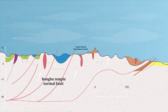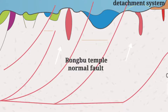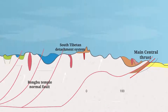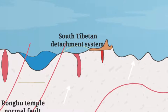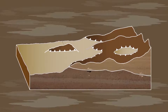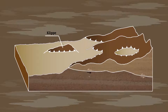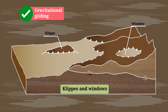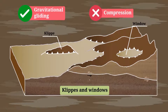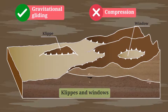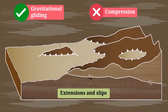For example, structures like the Rongbu Temple Normal Fault and the Main Central Thrust, which were considered a part of the South Tibet detachment system, were shown to have originated at a different time altogether. Further, two types of tectonic units — clippas and windows — were actually the result of gravitational gliding, as opposed to compression as previously believed, and thus should have been characterized as extensions and slips, respectively.